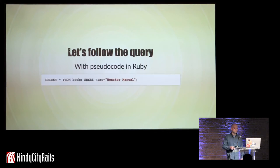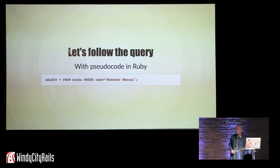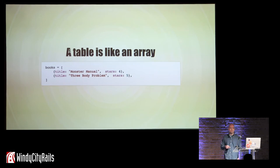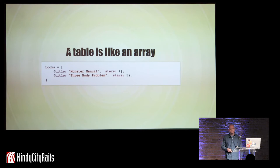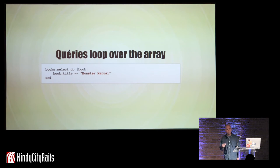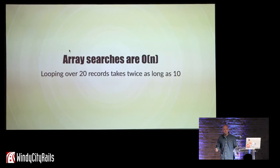So let's follow this query: select all books where name equals Monster Manual. We're going to do it in Ruby pseudocode, which is a technique I like to use when I'm trying to understand how hard computer science-y stuff works. A database table is kind of like an array. Here I've got an array of books, each has a title and other attributes. To find all of the books with a certain title, we have to loop through every item in the array and check its title. And that's the source of a lot of our problems.